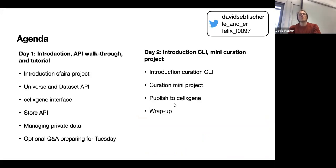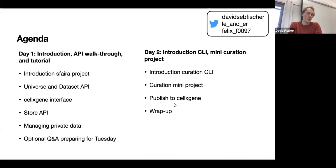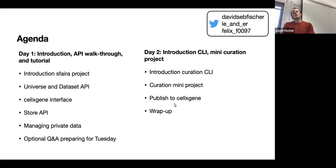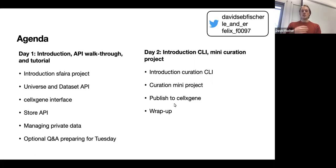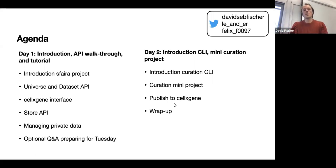Yesterday we went over general Sphira data API components that allow you to interact with data, including downloading, streaming, loading, and streaming data — essentially everything involving consuming data. Today we'll do a short introduction to our curation toolkit, which is the set of tools used to produce the curated data you would have used with the API components from day one.